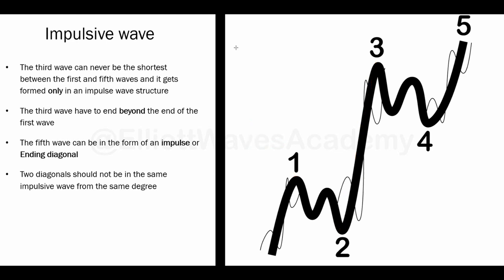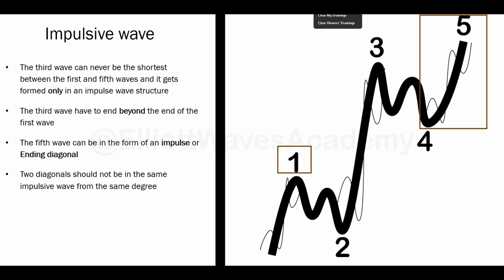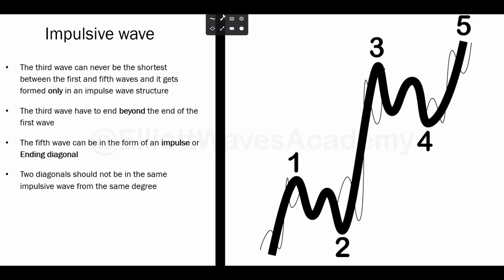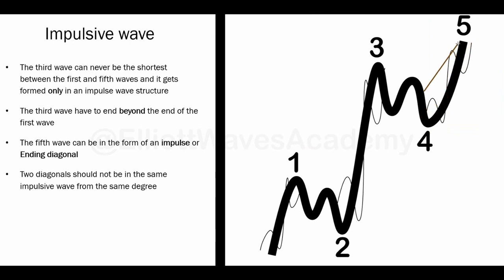The next rule says that Wave 5 can be an impulsive wave or an ending diagonal pattern, like Wave 1. We can see an impulsive wave as shown, or a diagonal pattern — either a normal wedge or an expanded wedge. But we have to be careful here.